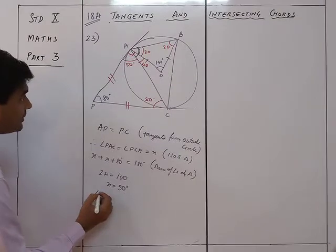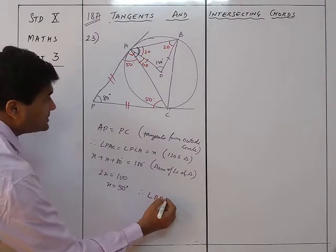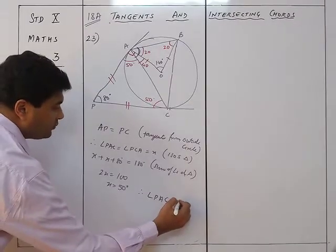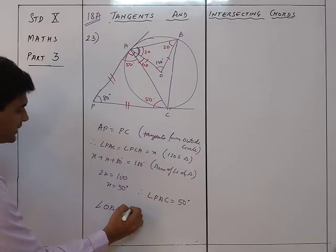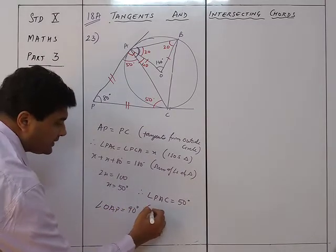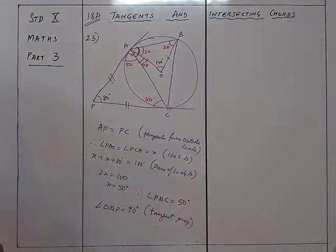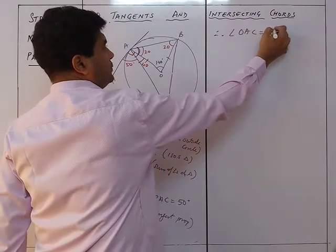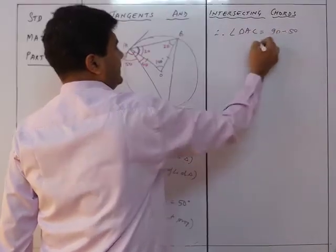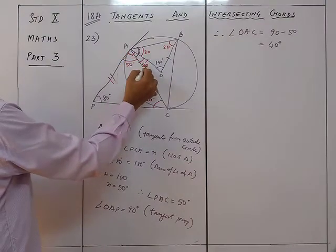Therefore angle PAC = 50 degrees. Next, angle OAP = 90 degrees (radius perpendicular to tangent). Therefore angle OAC = 90 − 50 = 40 degrees, because this full angle is 90 and angle PAC is 50.